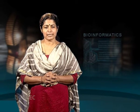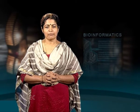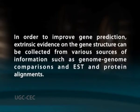Since sequence features such as codon bias and splicing signals vary from organism to organism, gene finders may not perform optimally in a foreign genome. The practice of annotating a genome with a foreign gene finder is commonplace, though its consequences are not widely understood. To improve gene prediction, extrinsic evidence on gene structure can be collected from various sources such as genome-genome comparisons and EST and protein alignments.